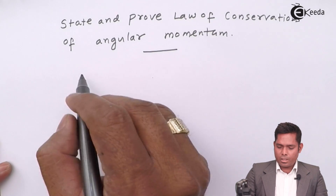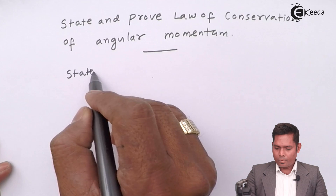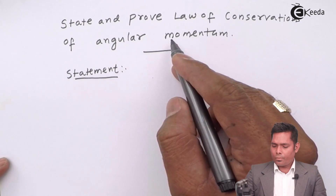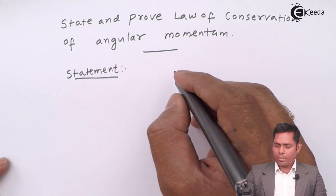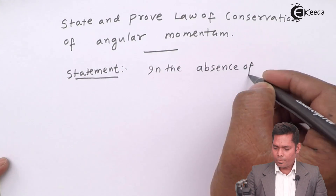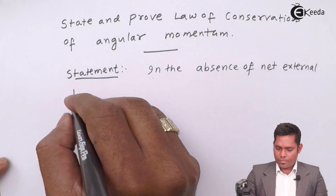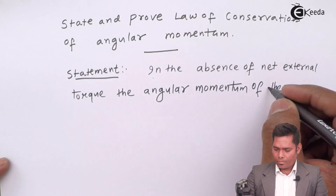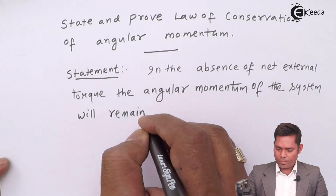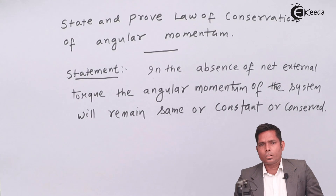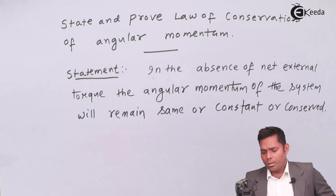State and prove. First is the statement. Conservation of angular momentum means — let me write the statement, then I will discuss. This is the statement: In the absence of net external torque, the angular momentum of the system will remain the same or constant.